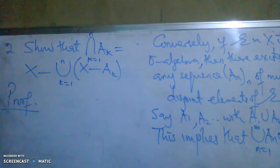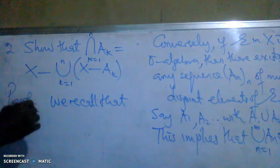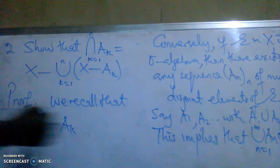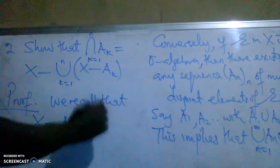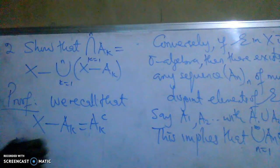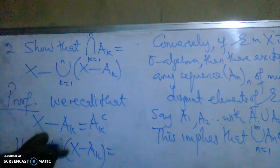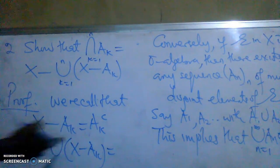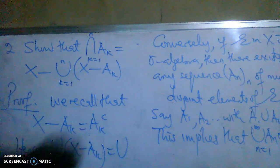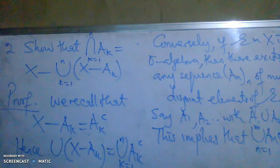We recall that X minus A_k is the complement of A_k in X. I hope you can recall that from set theory. Hence, the union of (X minus A_k) equals the union of A_k complement, as k moves from 1 to n — straightforward.